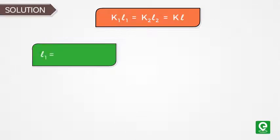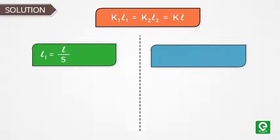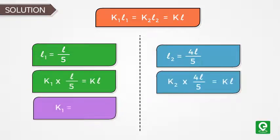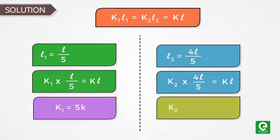Substituting l1 = l/5 and l2 = 4l/5, we have k1 = 5k and k2 = 5k/4.